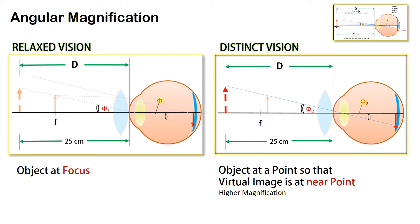We can have two types of magnification. In one, the object is placed at the focus and this is called relaxed vision. In another, the object is placed between focus and the lens such that the virtual image is formed at a distance of distinct vision from the eye. This is called distinct vision and gives higher magnification.